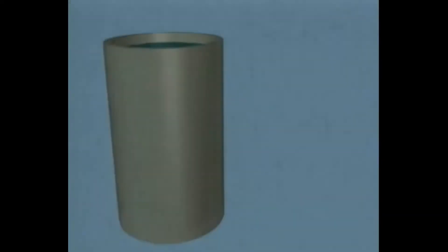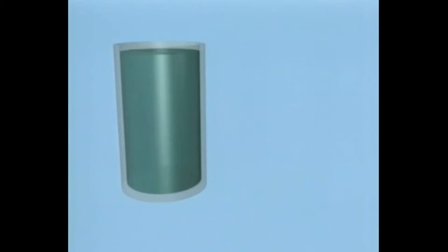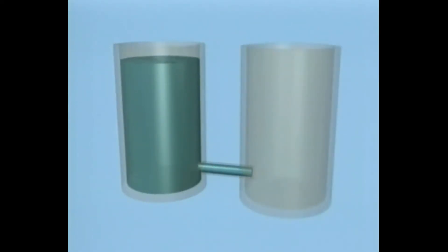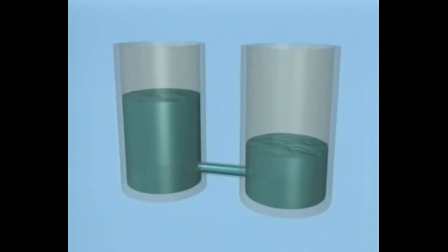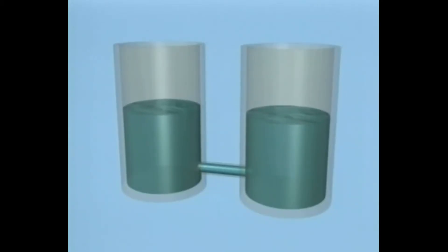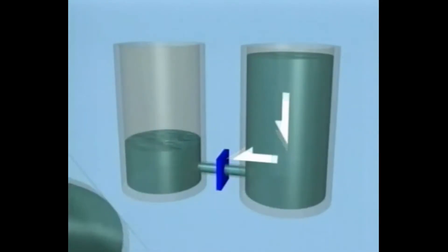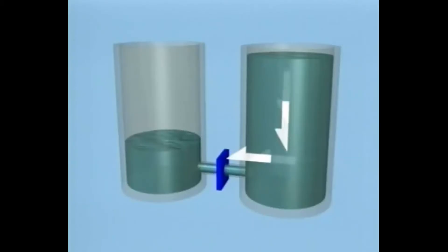Delta P stands for differential pressure. Our discussion refers to situations where the pressures between two bodies of water are dramatically different. In a situation like this, the bodies of water continuously seek to equalize themselves. In this example, the body of water on the right wants to rush to the body of water on the left by means of the pipe between them. The pressure exerted on the valve stopping this water transfer can be enormous.